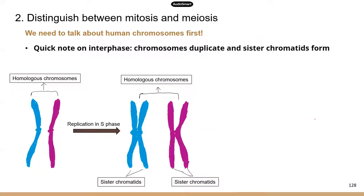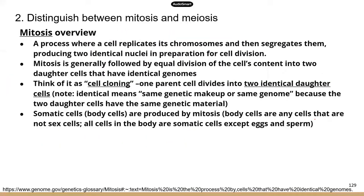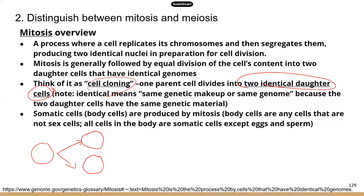Now let's look at mitosis and meiosis. For mitosis, the process is basically where a cell replicates itself and makes two identical daughter cells. Think of the process as cloning — you are making two daughter cells that are genetically identical to the parent cell. So this is the parent cell and these are the two daughter cells — they are identical to the parent cell.